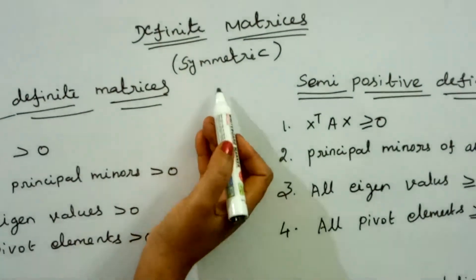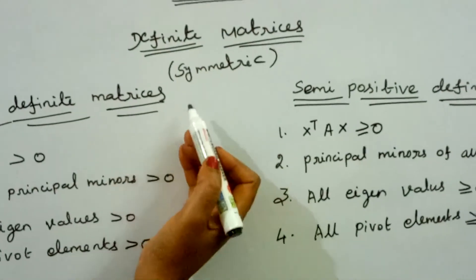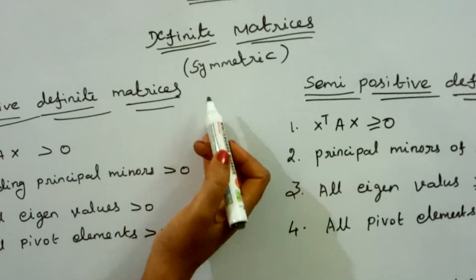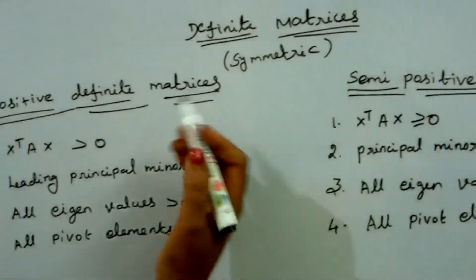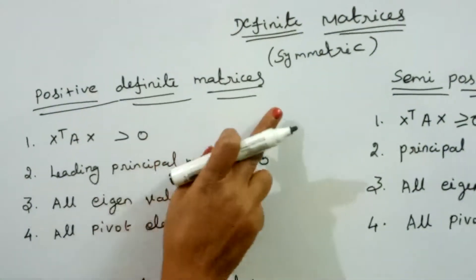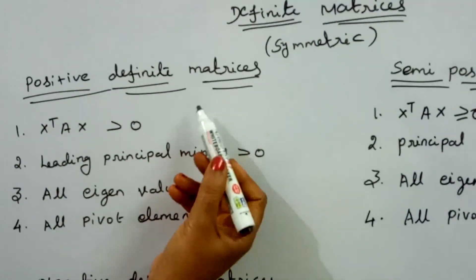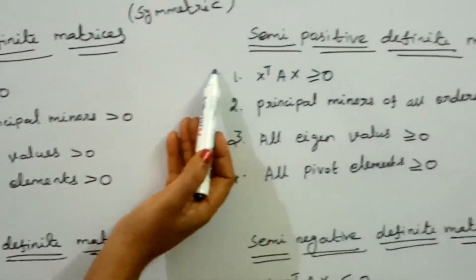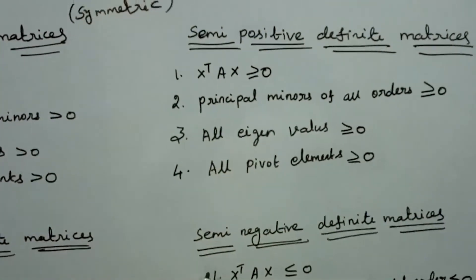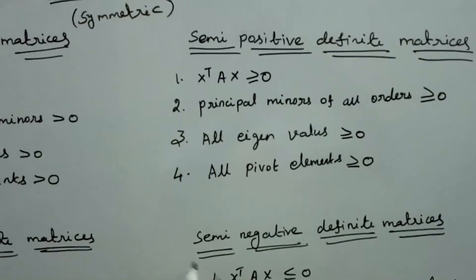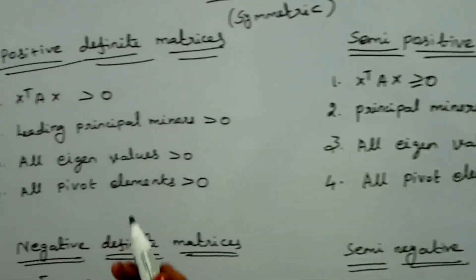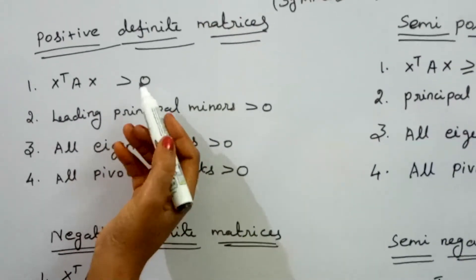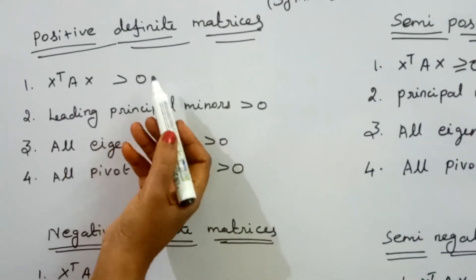In summary, we have discussed four types of definite matrices: positive definite, negative definite, semi-positive definite, and semi-negative definite. We can identify and verify each type using four methods.